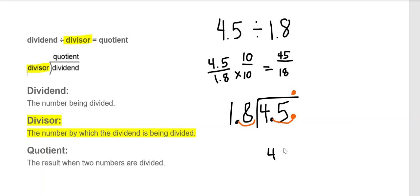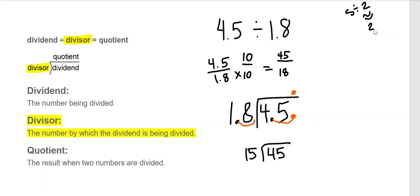Now we can always use estimation to help us with what we think the answer might be. 4.5 is close to 5, and 1.8 is close to 2. Half of 5 is 2.5, so my estimation — I'll put the approximation symbol here — is that 5 divided by 2 is approximately 2.5. I'll keep that in mind so I can compare my answer to that estimate, and if I'm not close I'll know something went wrong.